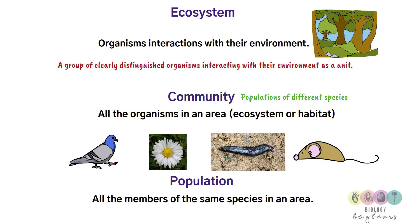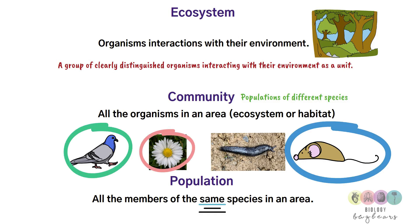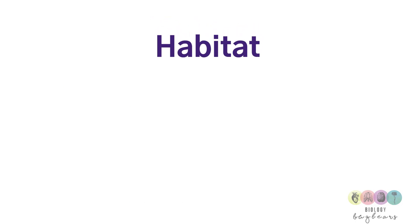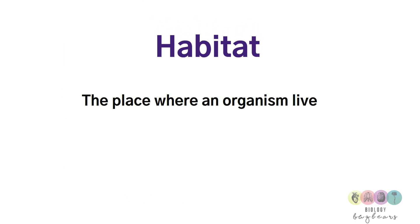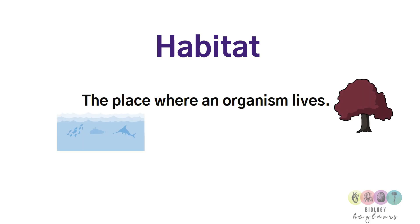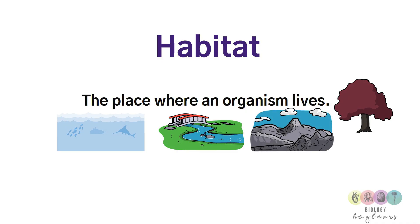A population is all the members of the same species in an area — it could be all the pigeons, all the mice, or all the daisies. All these different populations make up the community. Habitat is defined as the place where an organism lives — in trees, water, oceans, rivers, or mountains.